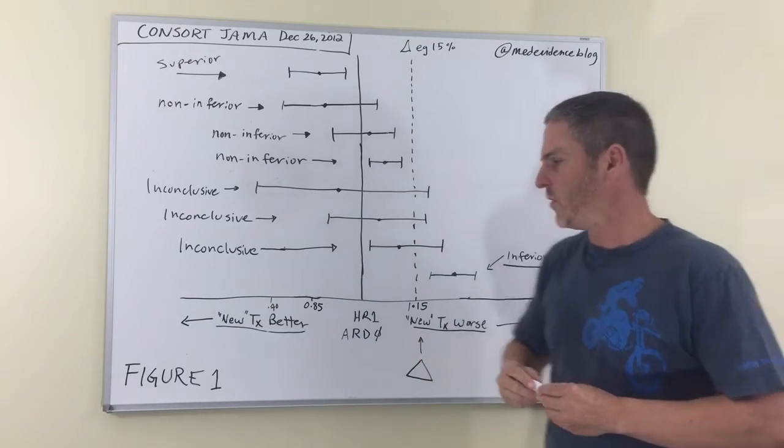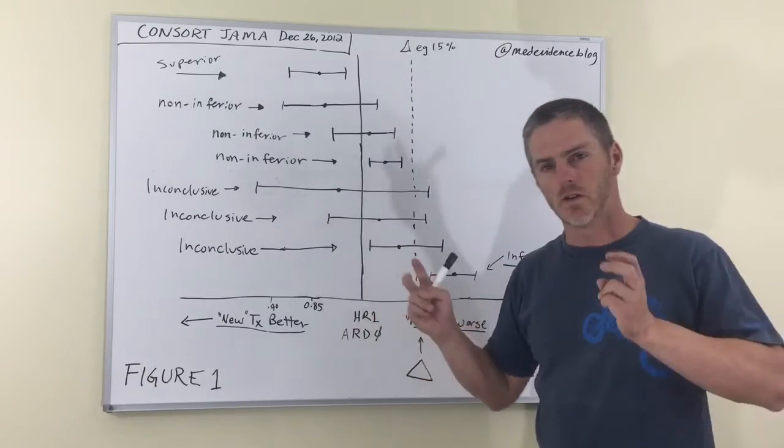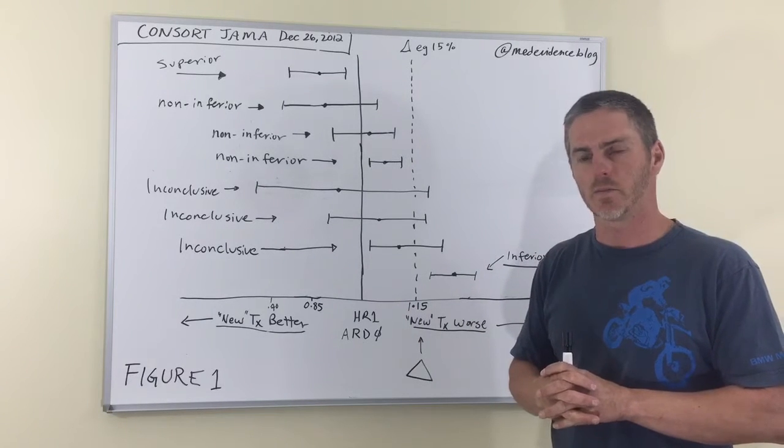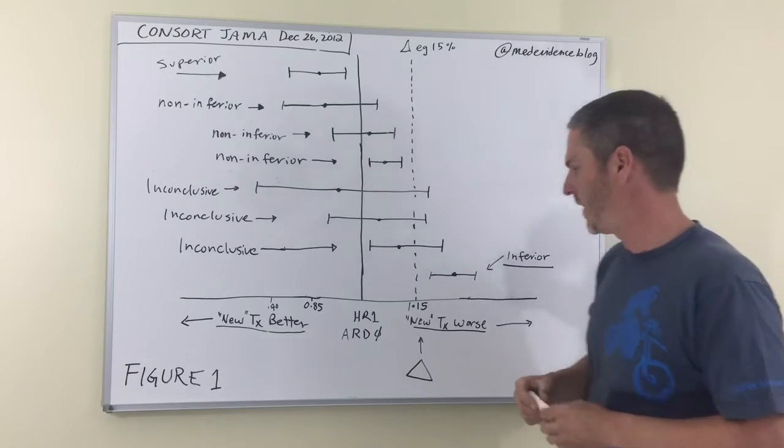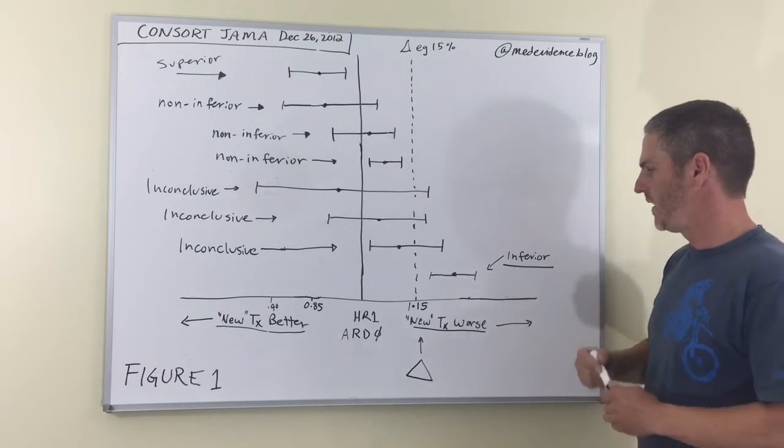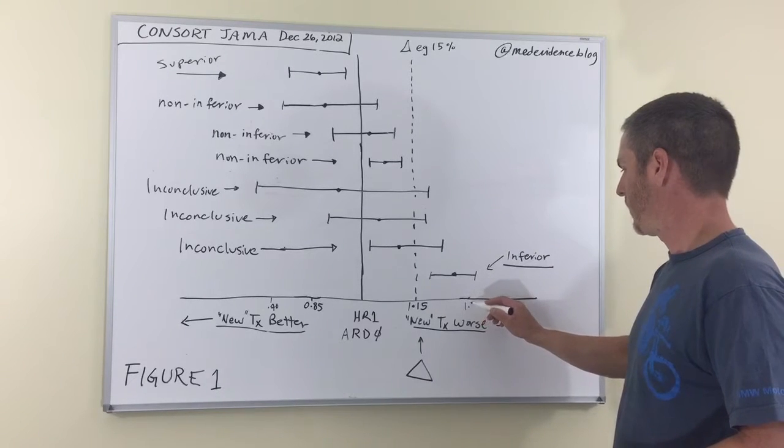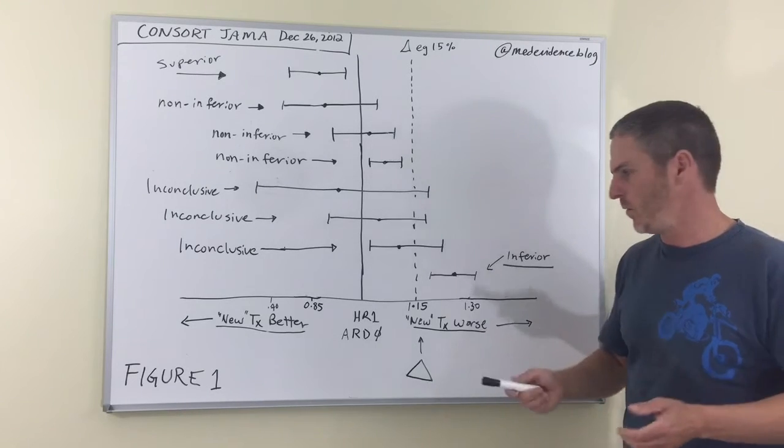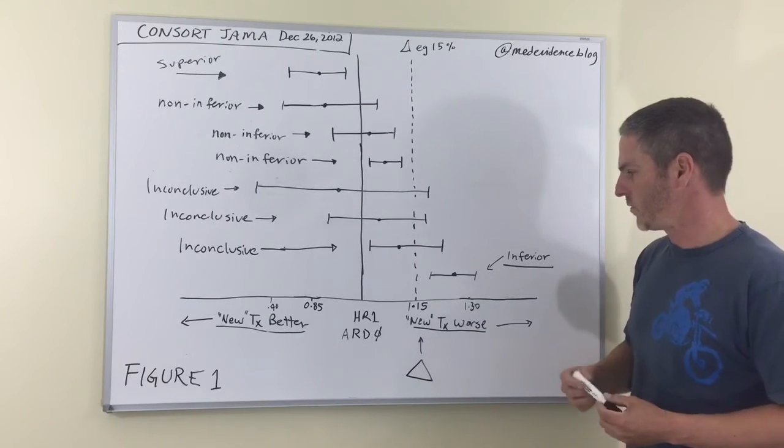that favors the new treatment, as though there's something about it being new that gives it a special consideration. And I'll talk more about that in a moment. When the confidence intervals and the point estimates fall on this side, 1.15, 1.30, that's where there's an increase in the outcome, an undesirable increase such that the new treatment is worse.